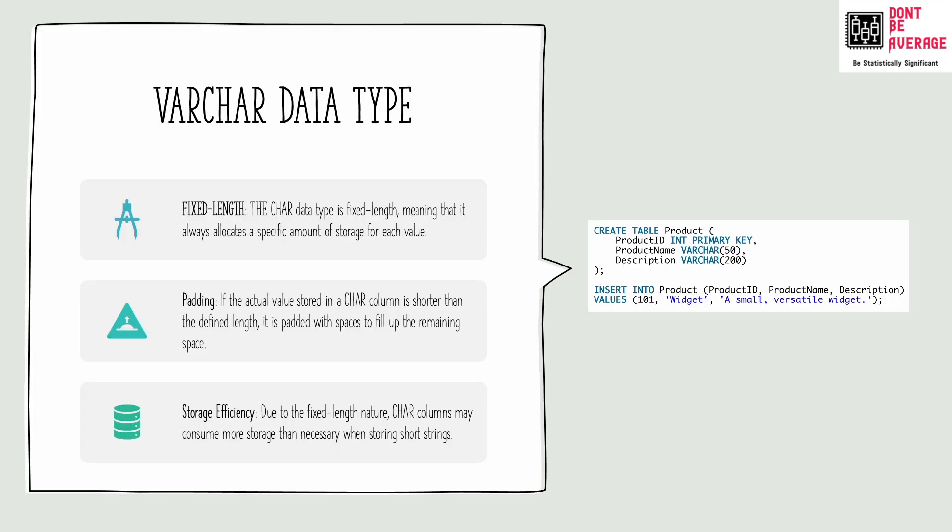Now let's look at an example for varchar. In this example, we created a table called product with two columns, product name and description, both the varchar data type. When we have inserted this product name and its description, only the actual length of the strings are stored without any padding. So exactly the way you are seeing it here, the way we are passing it exactly the same way without adding any extra spaces, it will be added to the column. That is how varchar works.